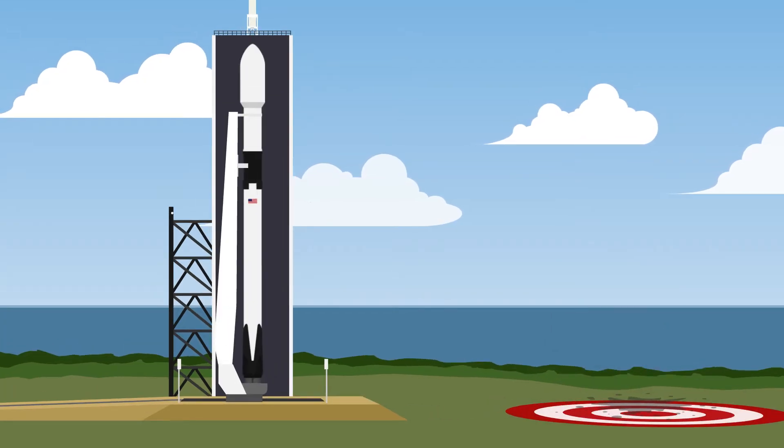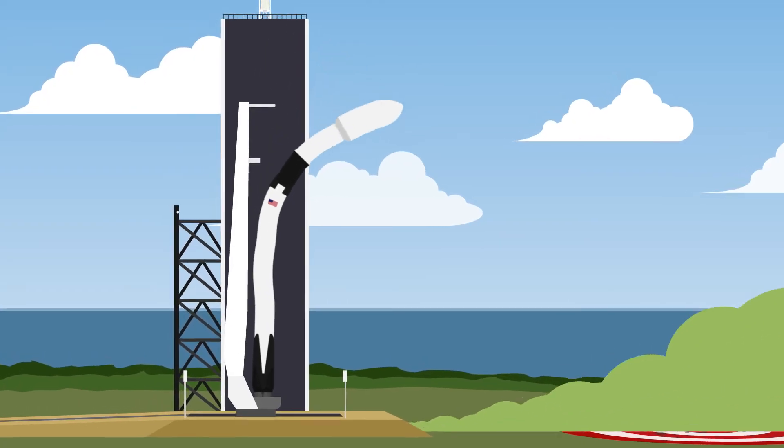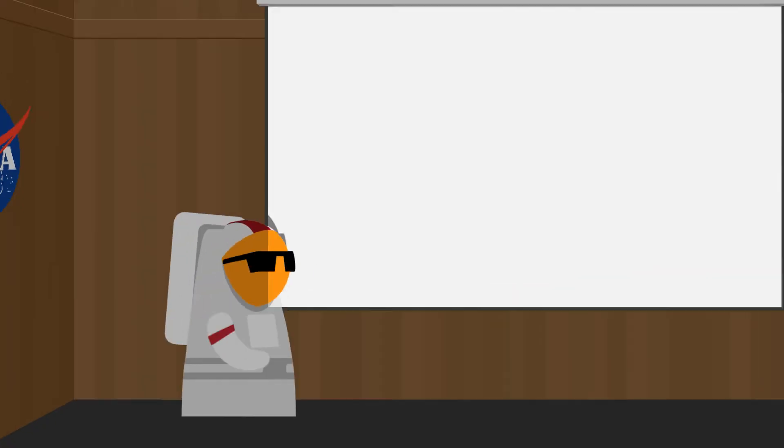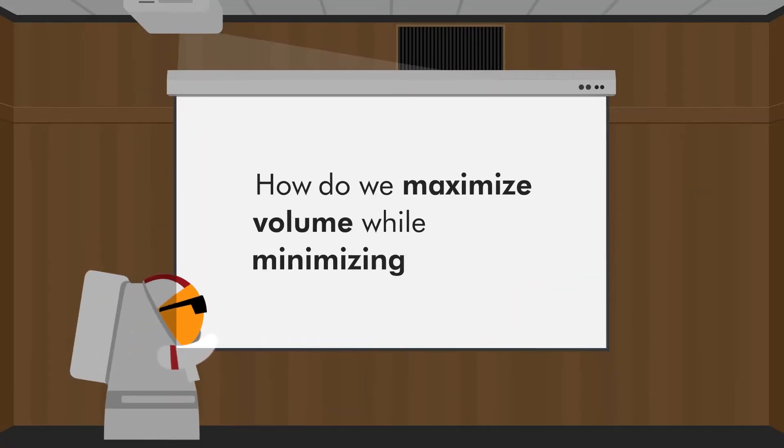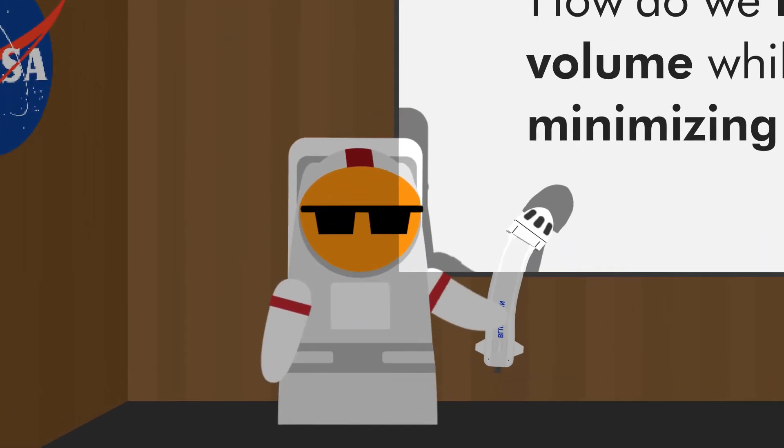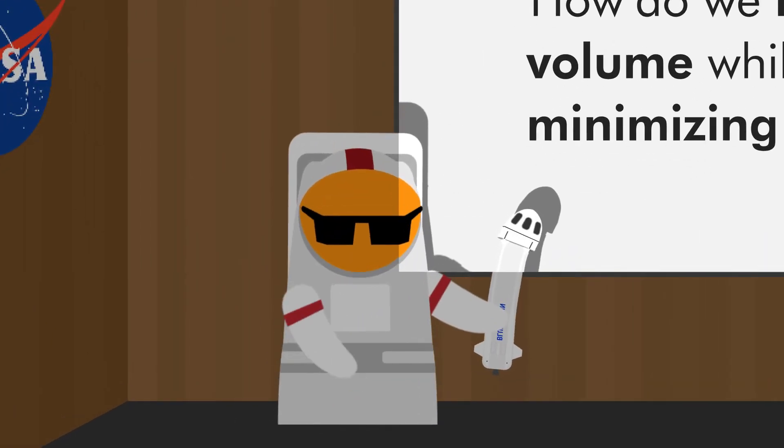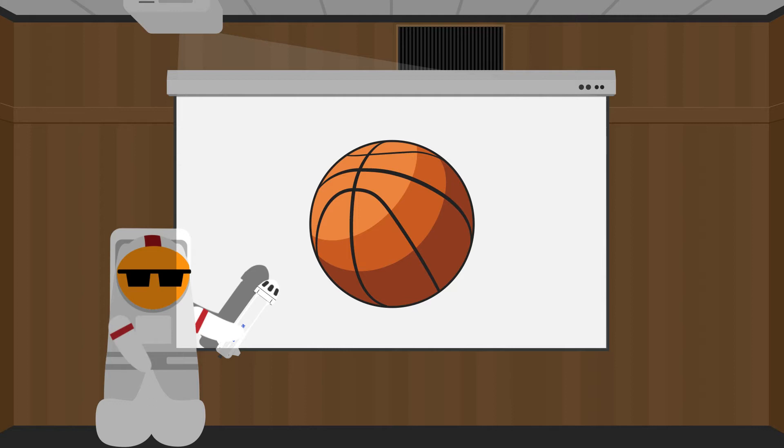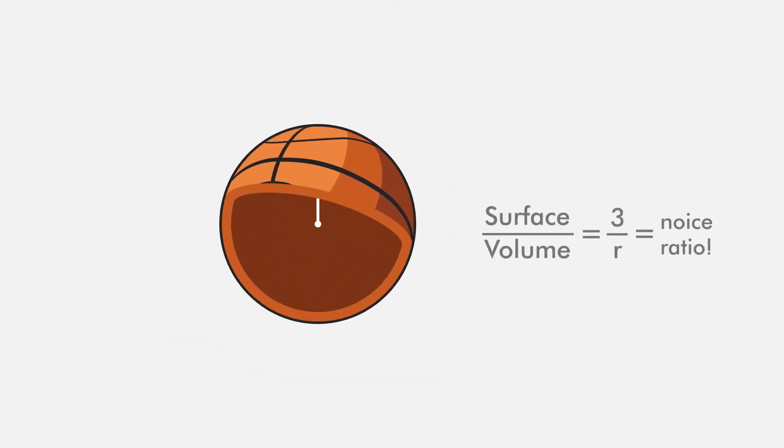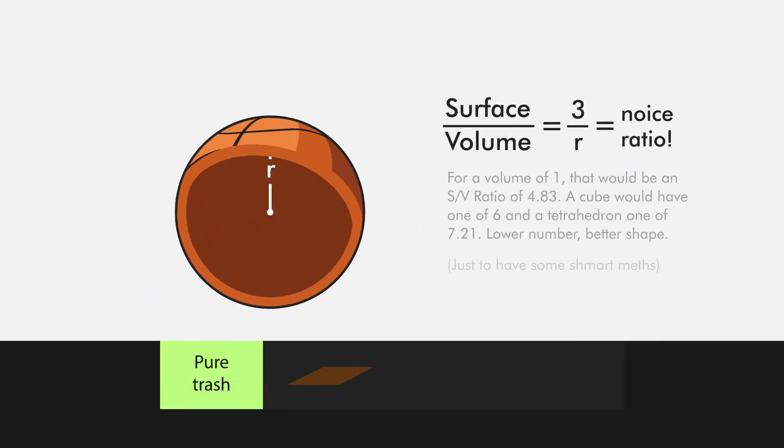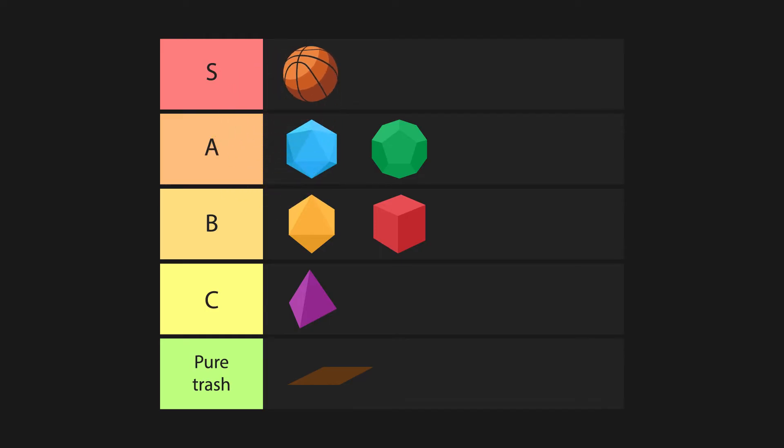Or the rocket won't lift off at all, resulting in a quite depressing rocket launch. So how do we maximize volume while minimizing weight so that that doesn't happen? The answer is balls. Round spherical balls. Because balls use the least amount of material for a given volume, making them the most weight efficient shape out there.